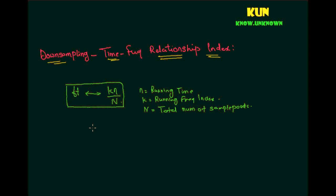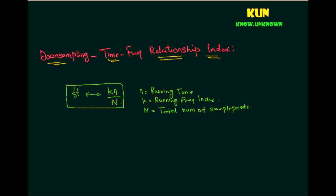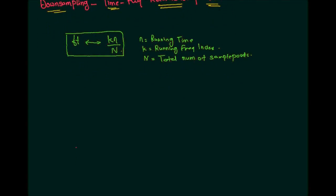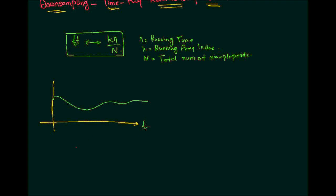Now what we want to do is establish a relationship when we down sample an already sampled signal. Let me draw a graph for clarity. If we have some analog signal going something like this, with infinite resolution, this is my running time t and amplitude a, and I want to convert this analog signal into the discrete domain. In order to do that, I need to specify the sampling frequency Fs.